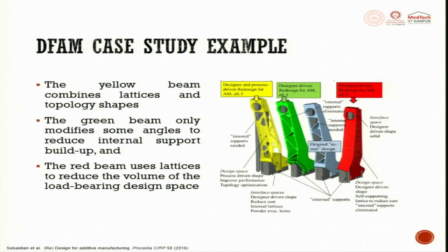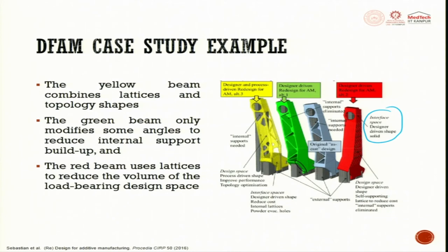In the redesign comparison, the green beam only modifies some angles to reduce internal support of the built item. The red one uses lattice to reduce the volume of the load-bearing design space — this is the designer-driven shape with a self-supporting lattice to eliminate internal support. The yellow beam combines lattice and topology shapes, with process-driven redesign for improved performance and topology optimization. These three design approaches illustrate how DFAM can be applied to optimize a component.